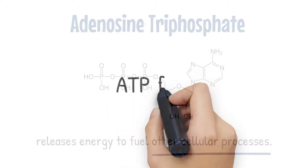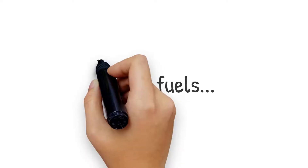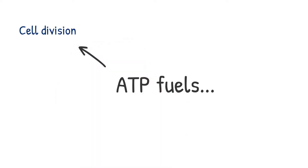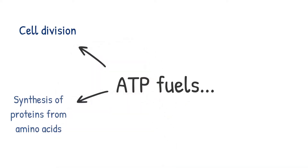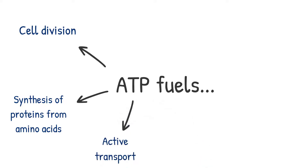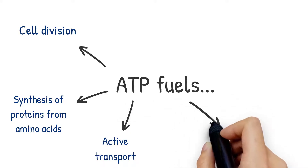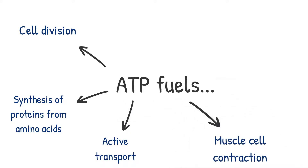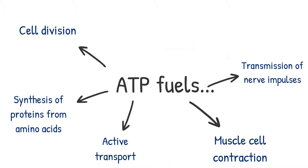Examples of cellular activities that require ATP for energy include cell division, synthesis of proteins from amino acids, active transport, muscle cell contraction, transmission of nerve impulses, and sexual reproduction.